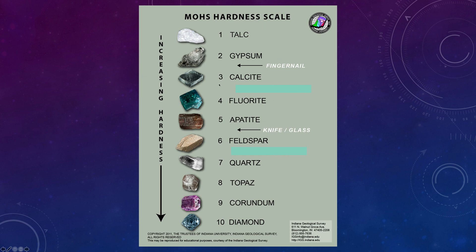Calcite, fluorite, and apatite have hardnesses of three, four, and five — that is the medium range because glass has a hardness of 5.5. None of the minerals one through five will scratch glass, but since one and two can be scratched with your fingernail, calcite, fluorite, and apatite are called medium. Six, seven, eight, nine, and of course diamond at number ten is the hardest mineral in the world — these all scratch glass.